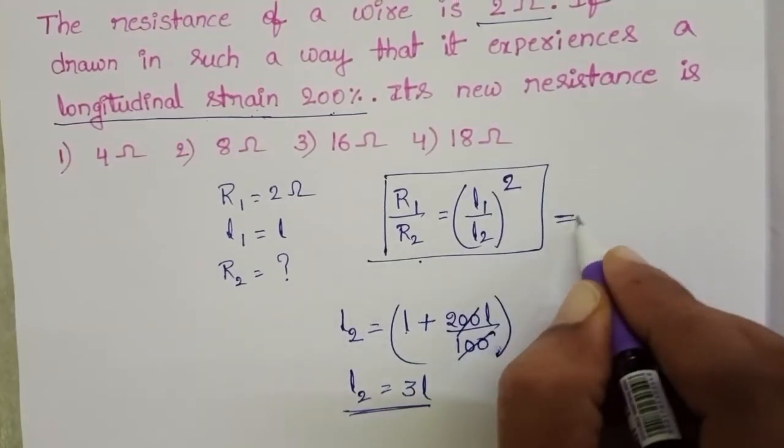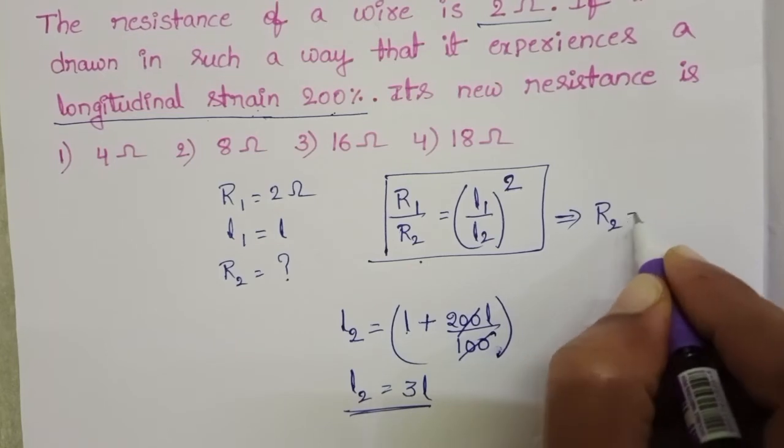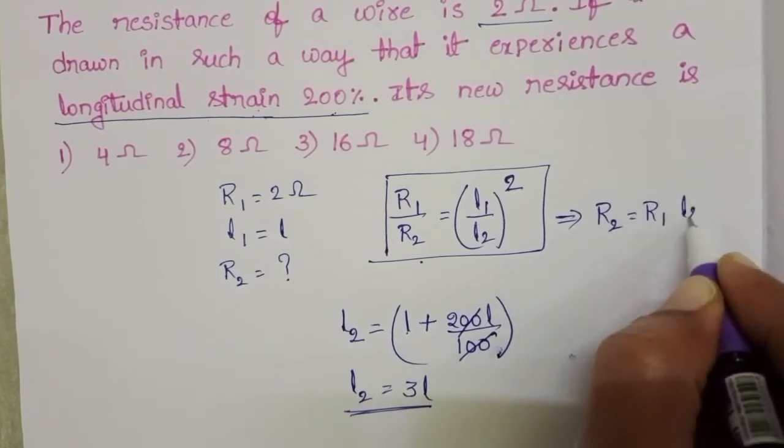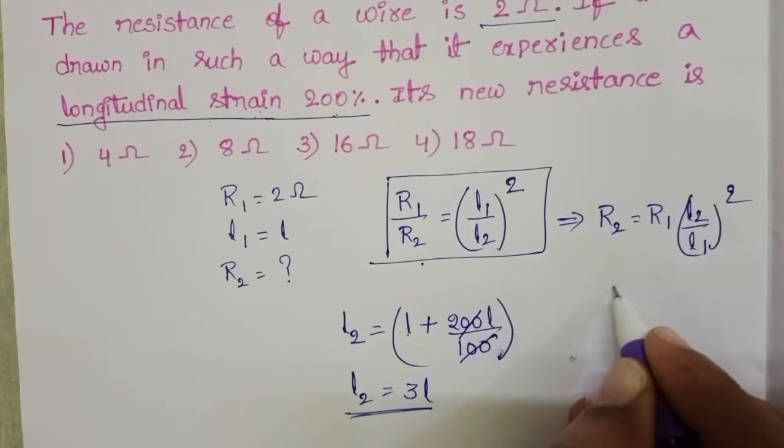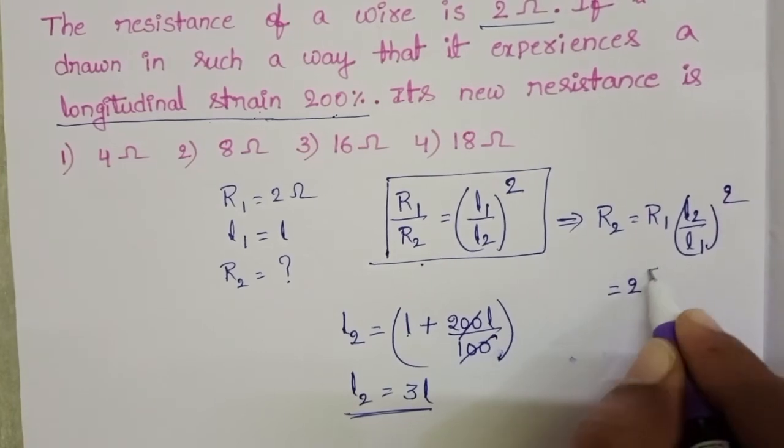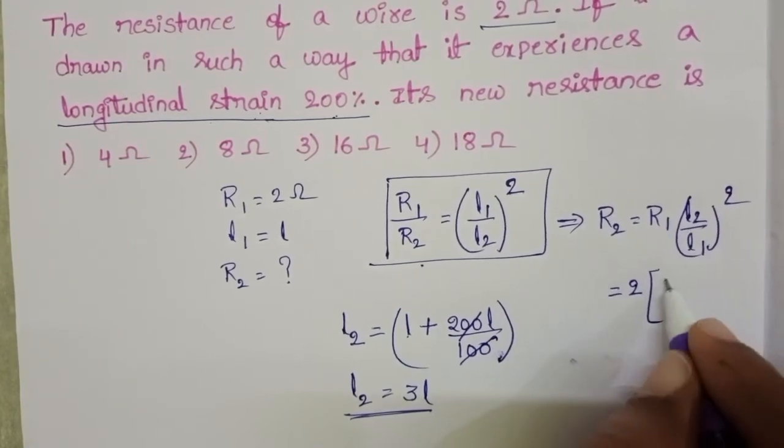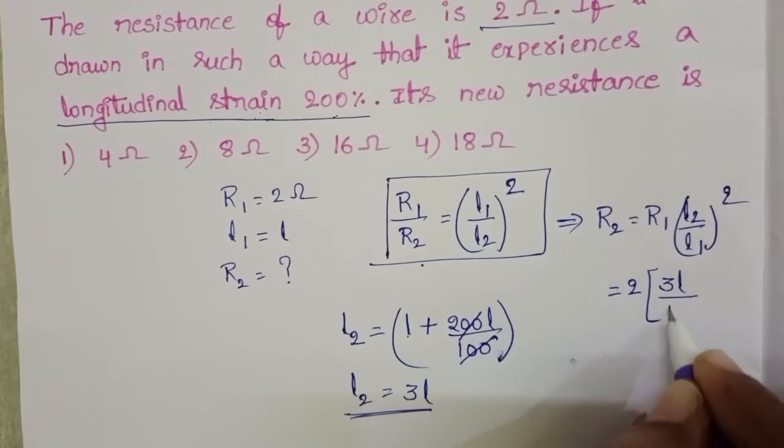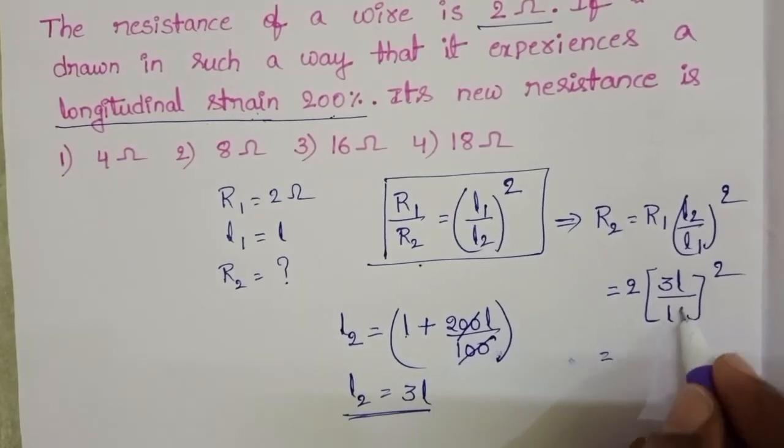From this, R2 equals R1 into L2 by L1 whole square. In place of R1, 2 ohm, and in place of L2, 3L by initial length L whole square.